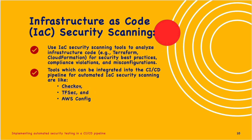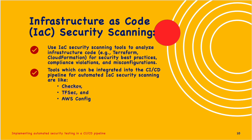Next is Infrastructure as Code, or IaC, security scanning. Use IaC security scanning tools to analyze infrastructure code — for example, Terraform — for security best practices, compliance violations and misconfigurations. Tools that can be integrated into the CI/CD pipeline for automated IaC security scanning include Checkov, tfsec and AWS Config.